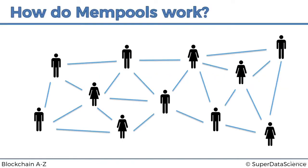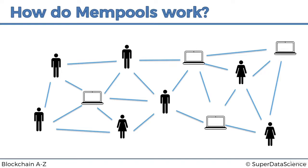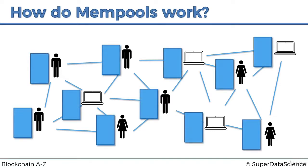Here we've got a network of participants called nodes - their computers are called nodes because they're not actually miners, they're just people who want to transact on the network, send each other bitcoins or any other cryptocurrency. We're going to replace a couple of miners just to add some variety to our network, to see that this actually works regardless of the configuration.